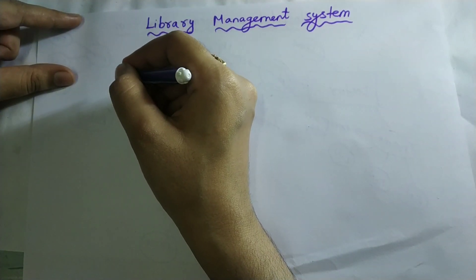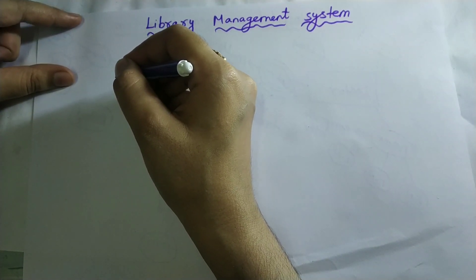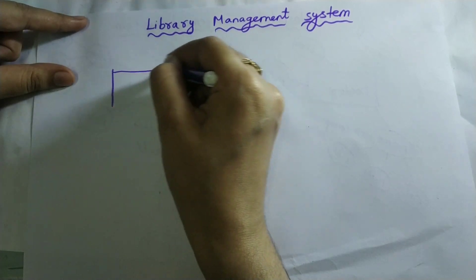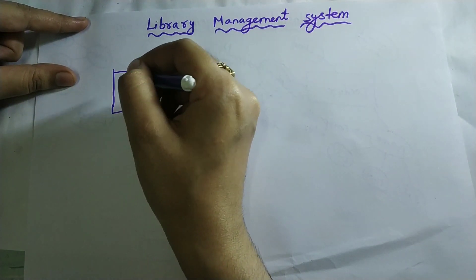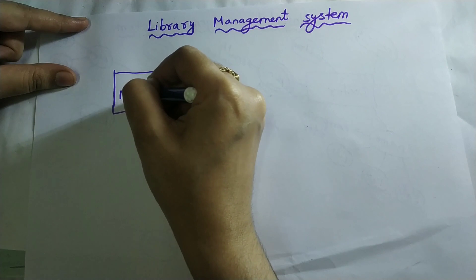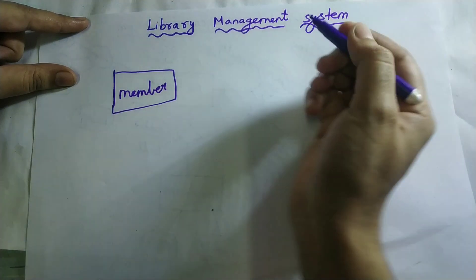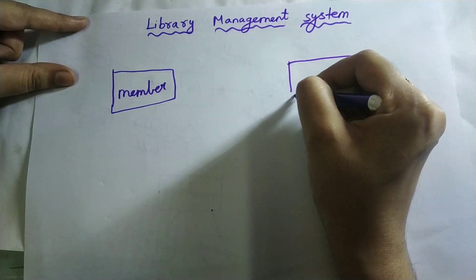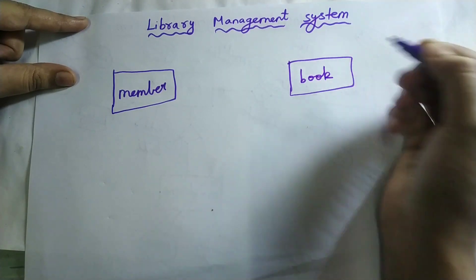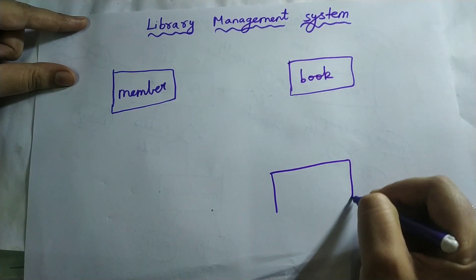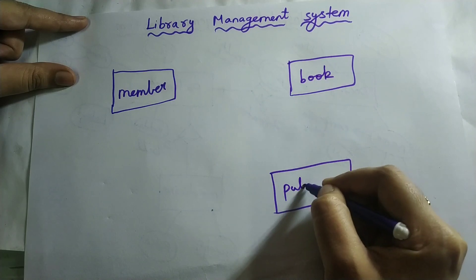We must write the entity name inside a rectangular box. The first rectangular box, I am going to write member. Second rectangular box, I am going to write book. Third rectangular box, I am going to write publisher.